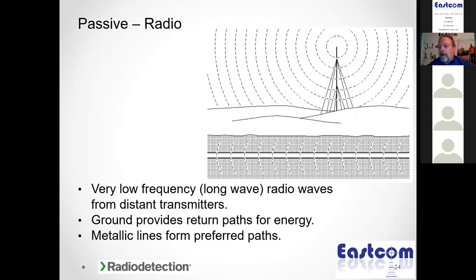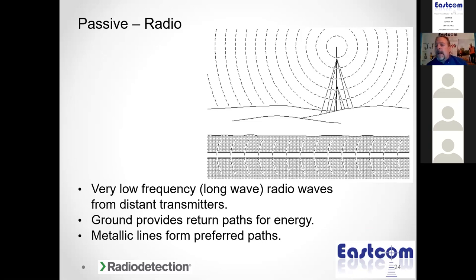Another passive mode is called radio. All the radio towers out here create a low RF frequency or signal in the atmosphere that couples onto metallic structures. These low frequencies jump on overhead cable, telephone and electric wires, fire hydrants, gas valves, chain link fences, guard rails, and steel frame buildings. If your locator has this passive mode it'll say 'radio,' show a radio tower, or show the letters RF. You can walk across a right-of-way in radio mode and pick up metallic utilities.